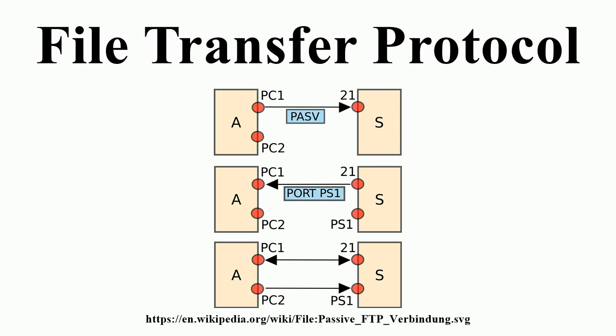Data transfer can be done in any of three modes. Stream mode: data is sent as a continuous stream, relieving FTP from doing any processing; all processing is left up to TCP. No end-of-file indicator is needed unless the data is divided into records. Block mode: FTP breaks the data into several blocks and then passes it on to TCP. Compressed mode: data is compressed using a single algorithm.